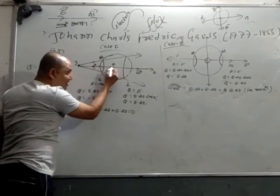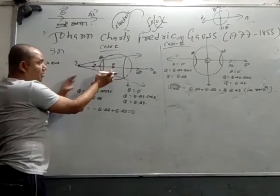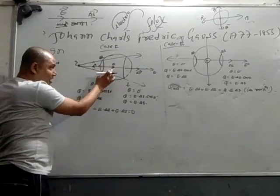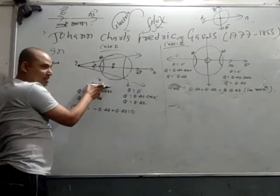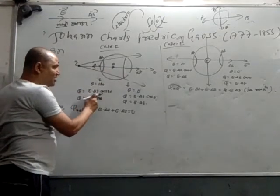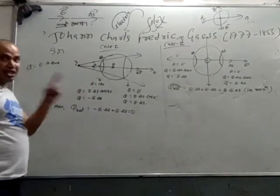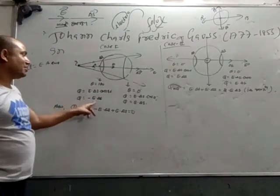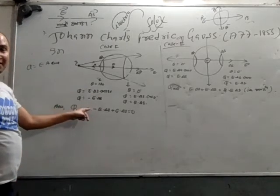The direction of the field is pointing in one direction. As you can see from the arrow markings, the field direction and the surface area direction are opposite to each other. So theta will be 180 degrees. Net flux will be E·S·cos 180°. Since cos 180° equals minus one, flux equals minus E·S. So negative flux results on the left side.